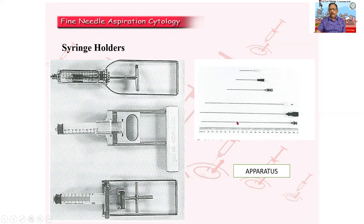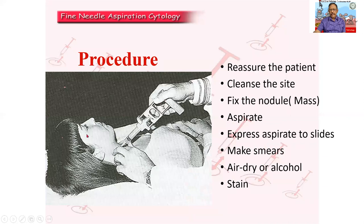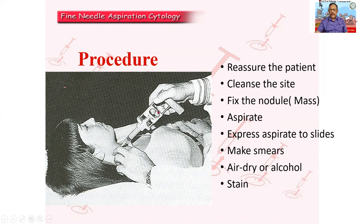These are the various needles — depending upon the depth, you can choose the needle. Look at the procedure: you will obviously reassure the patient, make the patient feel comfortable, clean the particular site. Wear a pair of gloves, clear the site with spirit, then fix the nodule between two fingers so that it does not move around — otherwise it will slip under the needle and the aspiration will not be proper. After fixing it, perform the aspiration. Pull the trigger and the material gets collected in the needle and a small amount in the barrel. Express it onto slides and make smears. The slides can be either air-dried or put in alcohol, and later staining can be done.